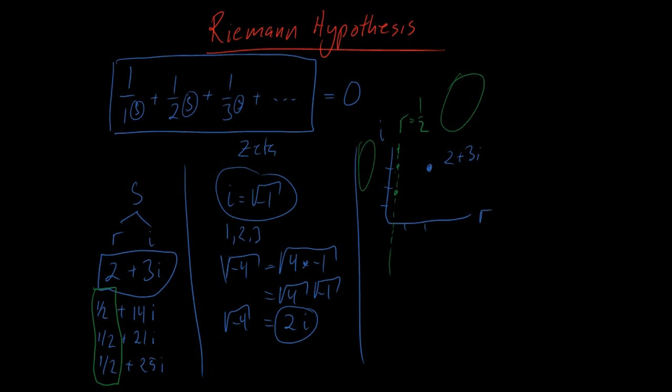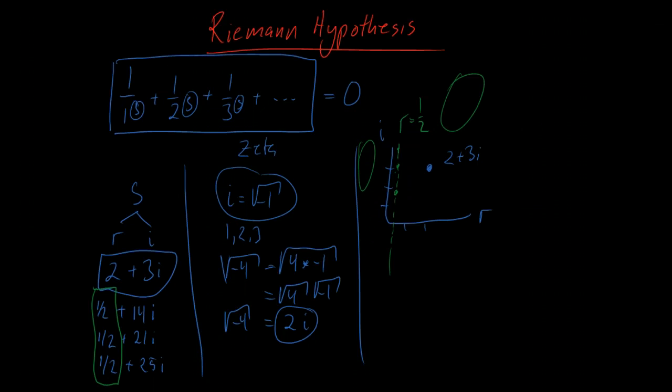You might ask: so what? Well, it's an important mathematical question, and it turns out the zeta function is related to another question: how many primes are there below a certain number? The zeta function is related to that question, so if you can prove the Riemann hypothesis, you can get important insights about the distribution of primes — the building blocks of numbers — and that could be a major breakthrough.